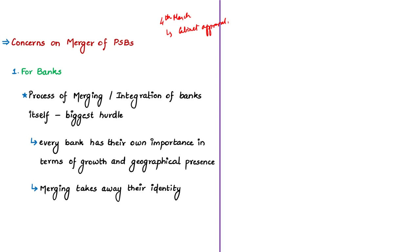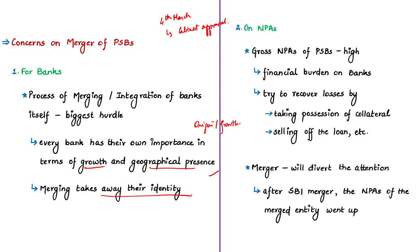The general secretary also told that since the nationalization of banks in 1969, banks have grown in terms of number of branches, business volume, and customer reach. This merger announcement by the government will actually take away the identity of such banks. The next concern is related to non-performing assets — NPAs.